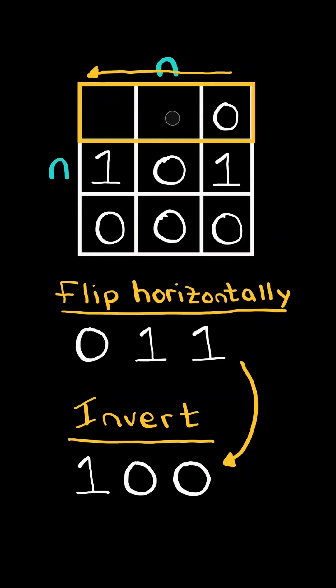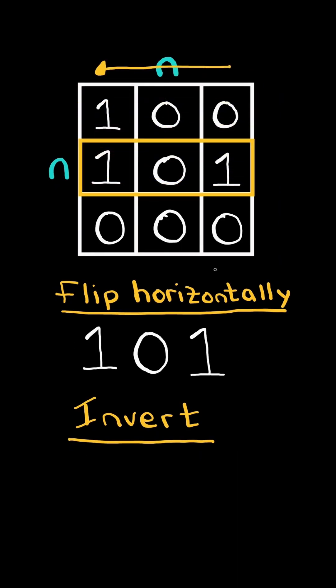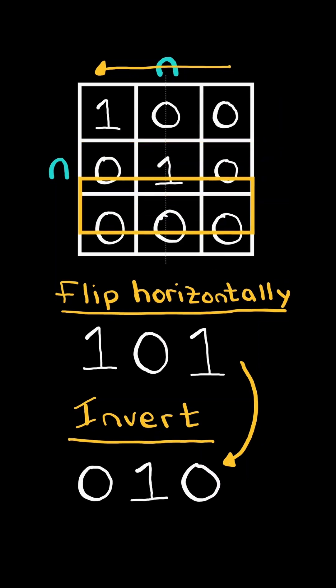And finally, we will update our row and replace it by the inverted row. And we continue this process for the next rows. We will flip the row horizontally by reversing the row. And then we invert the row by flipping all the 0s to 1s and all the 1s to 0s. And finally, we will update the row and replace it by the inverted row.